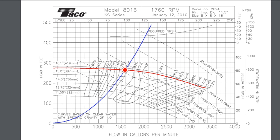Which brings us to power. At that operating point, we're sitting partway between the 125 horsepower dashed line and the 150 horsepower dashed line. Those are lines of differing power levels. The higher the head and the higher the flow — remember power is rho times g times h times Q — the higher the power we need to put in to drive the pump.